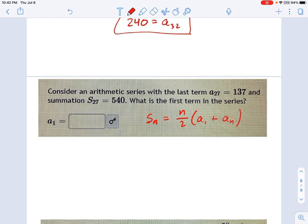And let's see what we know and what we want. Okay, we're told the summation, 540. That tells us how many terms there are, right? There's 27 terms, 27 over 2. A1 is what we want. Okay, they want to know what a1 is. So that we just have to leave as a1. And the 27th term is 137.